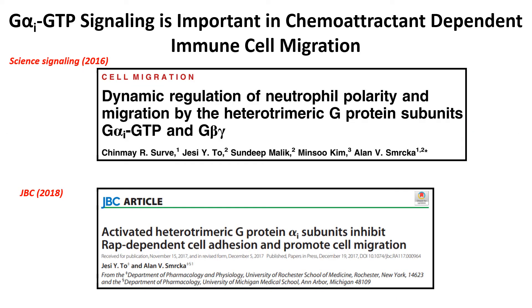Multiple reports from our lab showed that G-alpha-I-GTP — that is, activated G-alpha-I — is required for chemotaxis-dependent cell migration. But we still don't know what G-alpha-I directly regulates to perform all these functions.